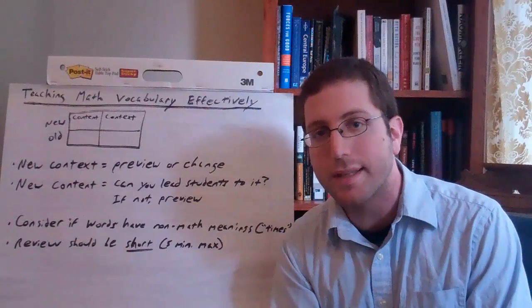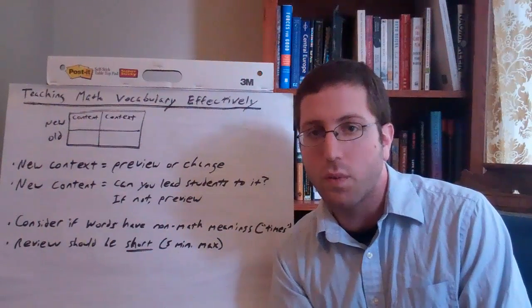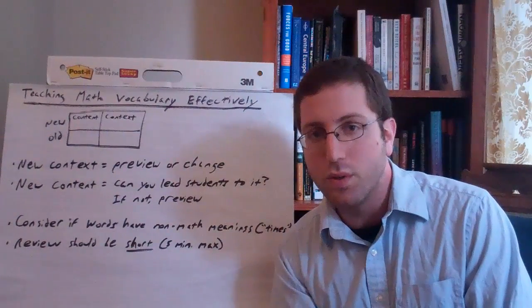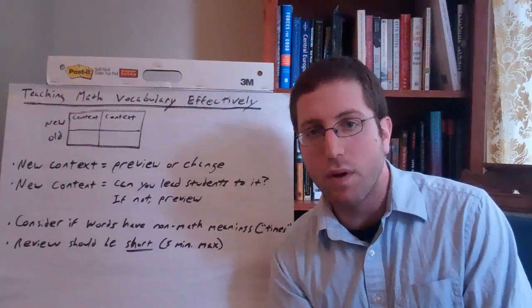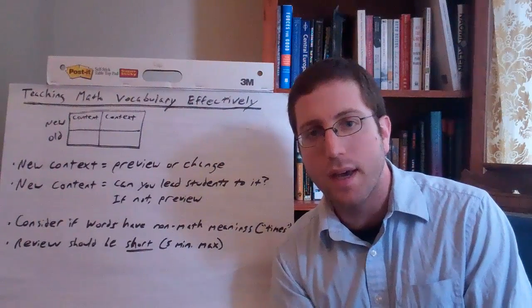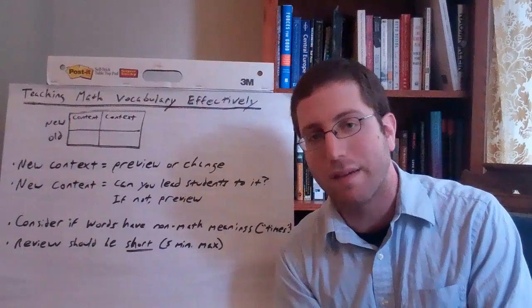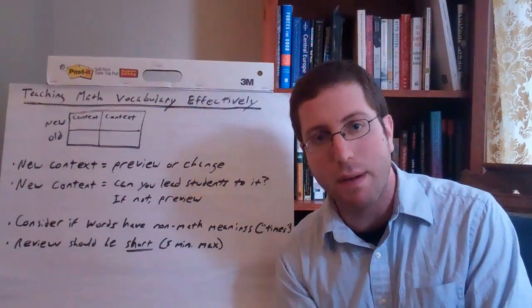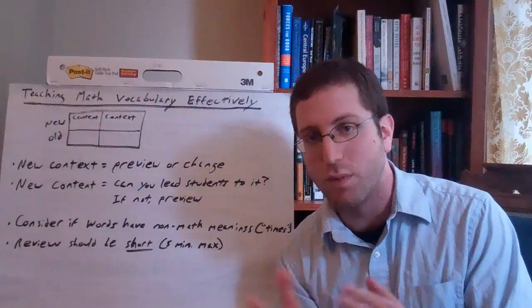Now, there are some concepts that you're just not going to be able to do it with. It might be hard, for example, to find ways to talk about perimeter without using the word perimeter. Maybe you can, but that could be an example that if you don't feel like there's a way you can comfortably get students to understand what that is, then just go ahead and preview that at the beginning of the lesson. You know, today we're going to be learning about perimeter. Let's quickly go over what perimeter is and then we'll see examples of it as we move forward.